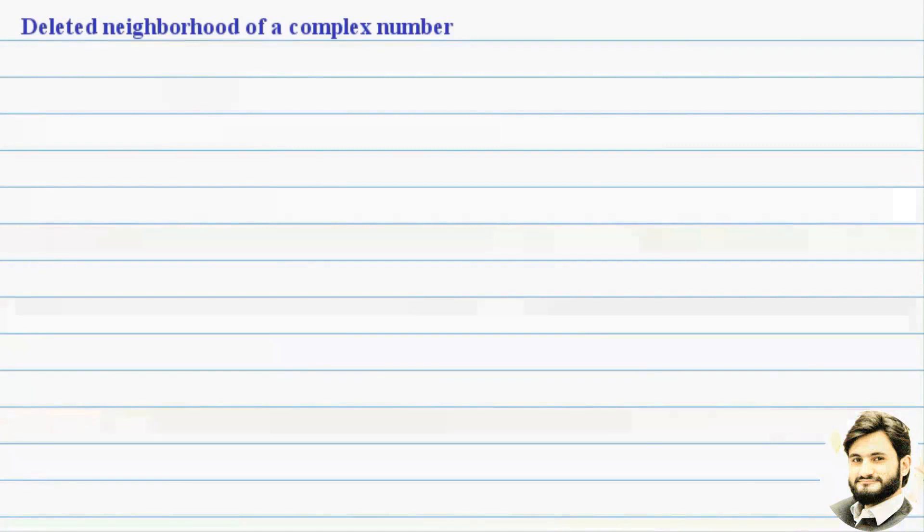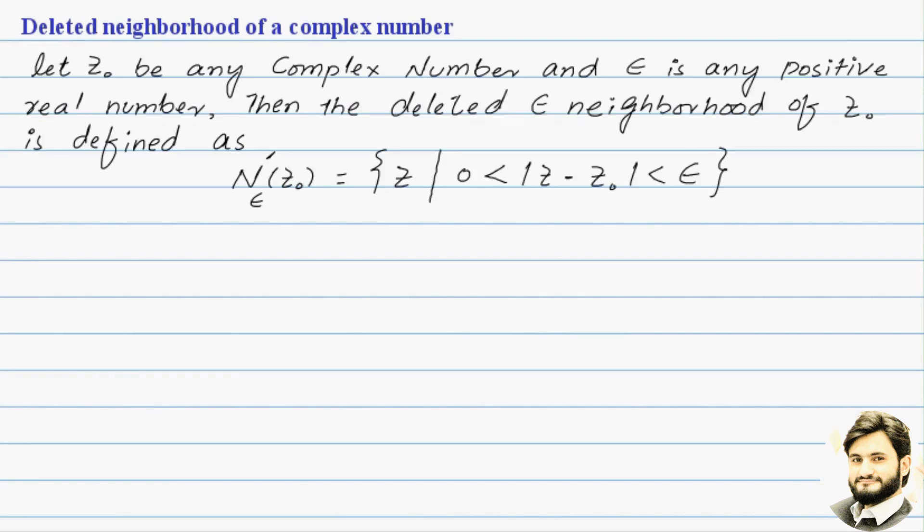Deleted neighborhood of a complex number. Let z0 be any complex number and epsilon is any positive real number, then the deleted epsilon neighborhood of z0 is defined as the set of complex numbers whose distance from the point z0 must be greater than zero and less than epsilon.